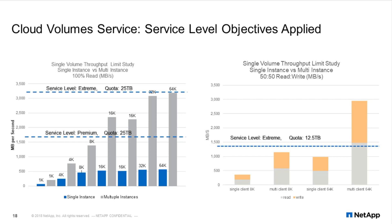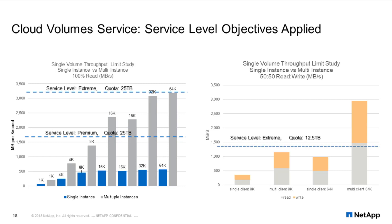If you set a quota of 100 or 50 terabytes — anything larger than the maximum achievable from a volume — you're spending money on a larger quota without getting any more I/O. For 32K random read, an Extreme service level at 25 terabytes quota would work. For a 50-50 read/write workload at single client 64K, that client drives about 1,000 megabytes per second — about 2x the single session capability since it's bidirectional: 4.5 gigabits read and 4.5 gigabits write. A service level Extreme with a 12.5 terabyte quota will achieve these numbers.